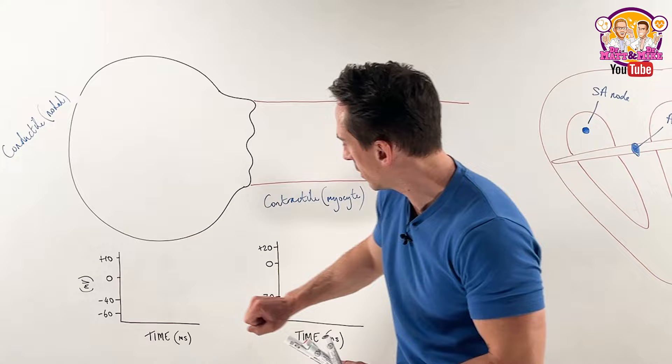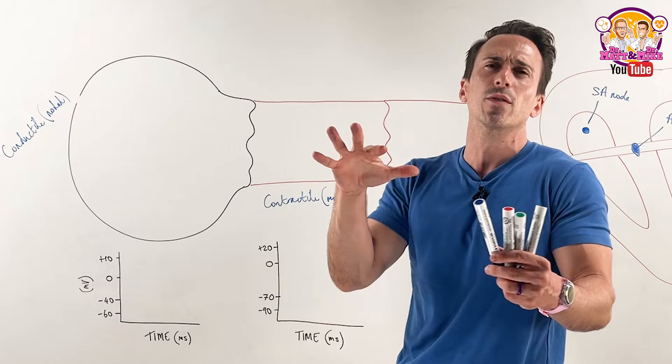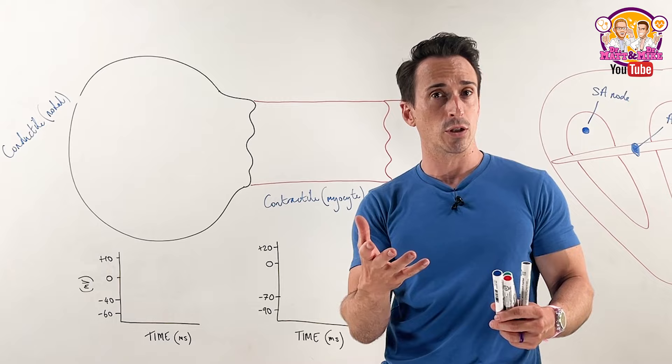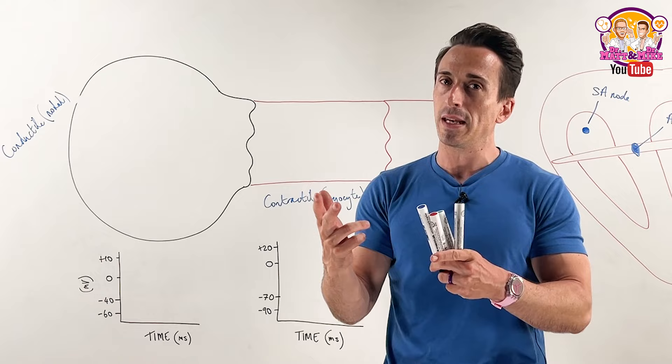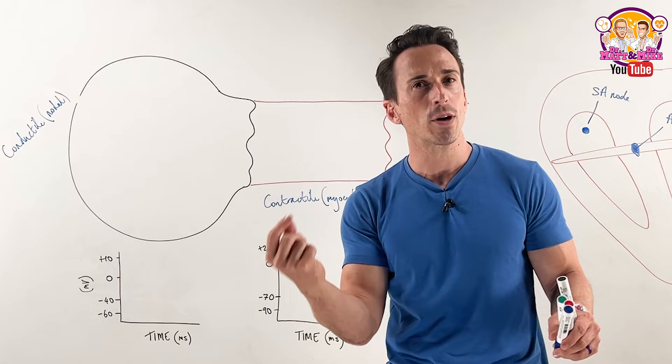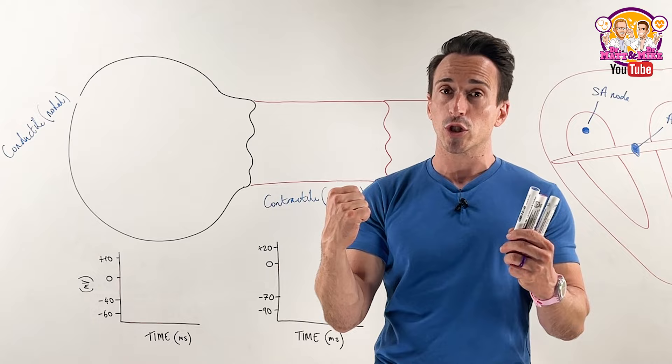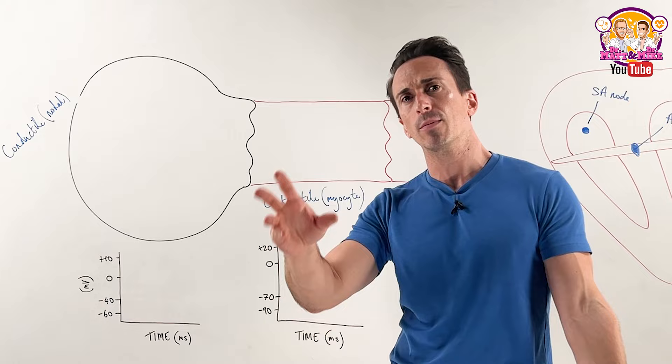First thing you must understand is that all cells of the body have a charge difference across the membrane. This is really important especially for excitable cells or excitable tissues, which include nervous tissue, muscle tissue, and endocrine tissue. They're excitable meaning they can be at rest and not do anything, but if you excite or trigger them, they can then do something. Neurons can send a signal; you excite muscle cells and they contract; you excite endocrine tissues and they can release a hormone like insulin into the bloodstream.